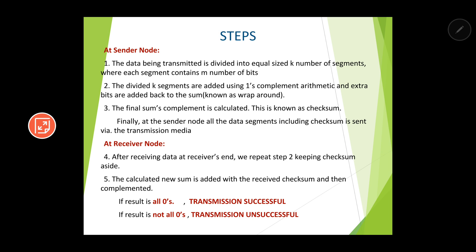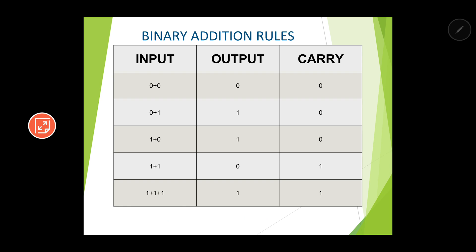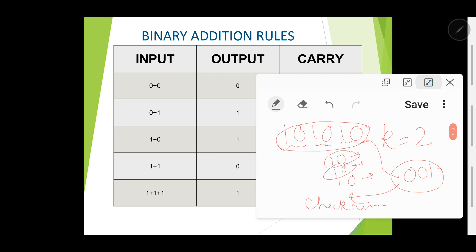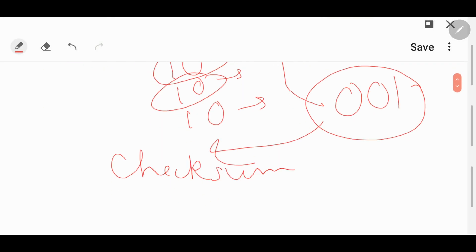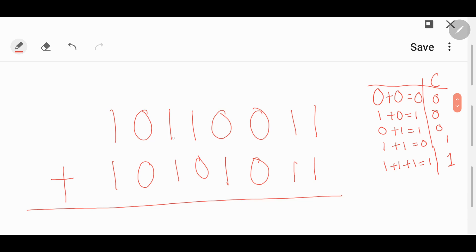For this checksum technique, we require certain rules known as binary addition rules. You have already studied these in class 11, but for the sake of completion, here is the table: 0+0=0 carry 0; 1+0=1 carry 0; 0+1=1 carry 0; 1+1=0 carry 1; 1+1+1=1 carry 1. Let us try a binary addition example for revision — we take two data units and add them using binary arithmetic.